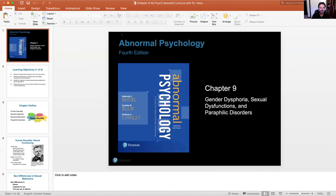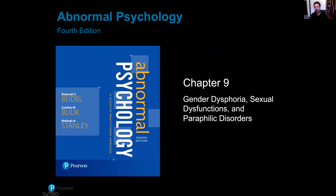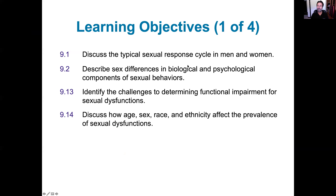Most students find this chapter very interesting and we all learn a lot. Let's start our PowerPoint. We're going to start with a review of the sexual response cycle for men and women, some differences between the psychological and biological components of sexual behaviors, a little bit of functional impairment and the sexual dysfunctions, and we'll discuss the age, race and ethnicity effect and prevalence of sexual dysfunctions.